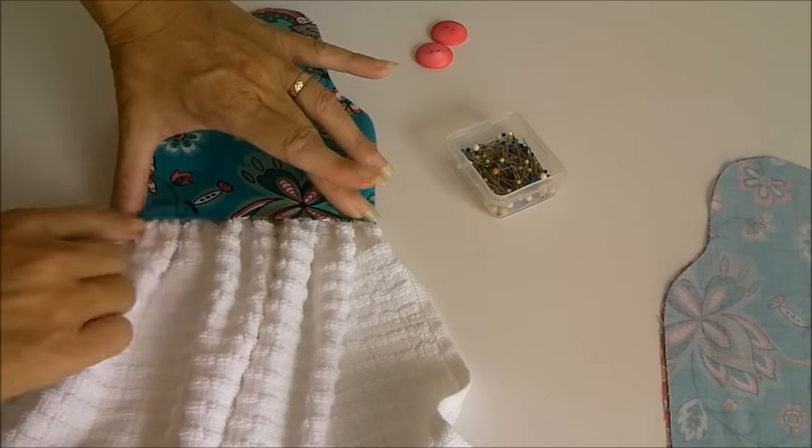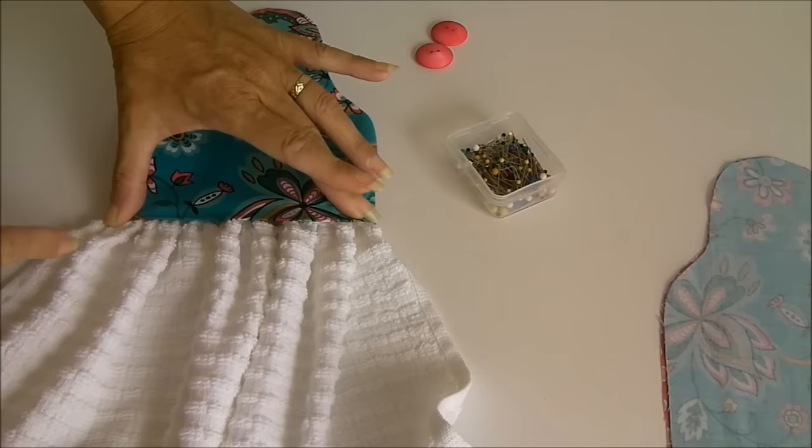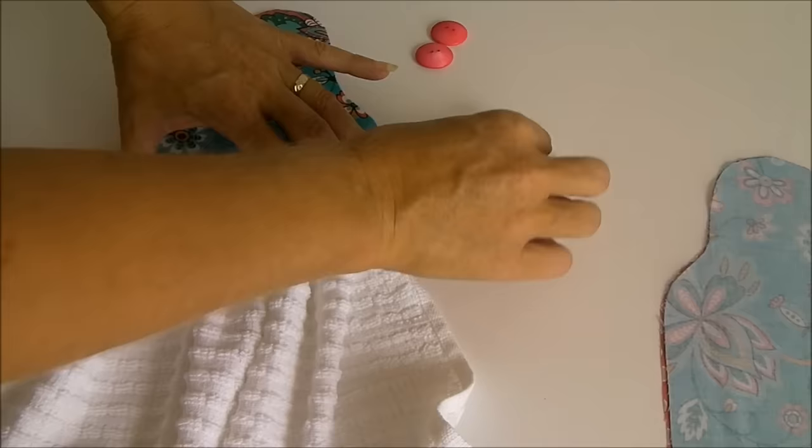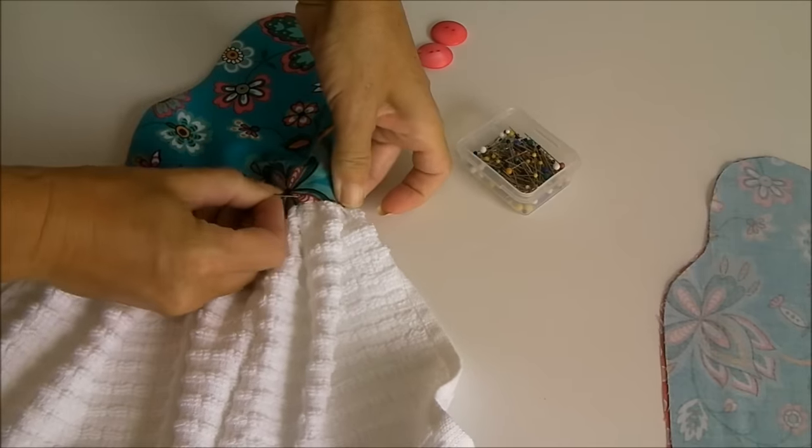If your towel has stripes, try and make sure that the stripes are going to run parallel here and everything looks good. Once you're happy, pop a few pins in place and then we need to take it to the sewing machine and stitch.